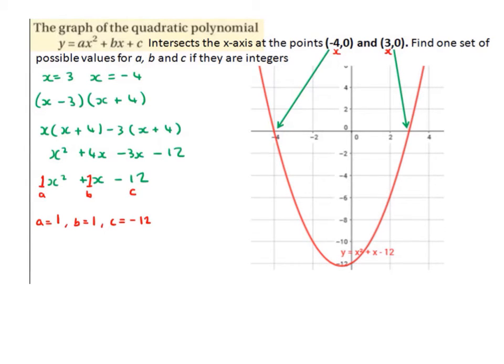So we found one set of possible values for a, b, and c, and they are indeed integers. They are positive or negative whole numbers.